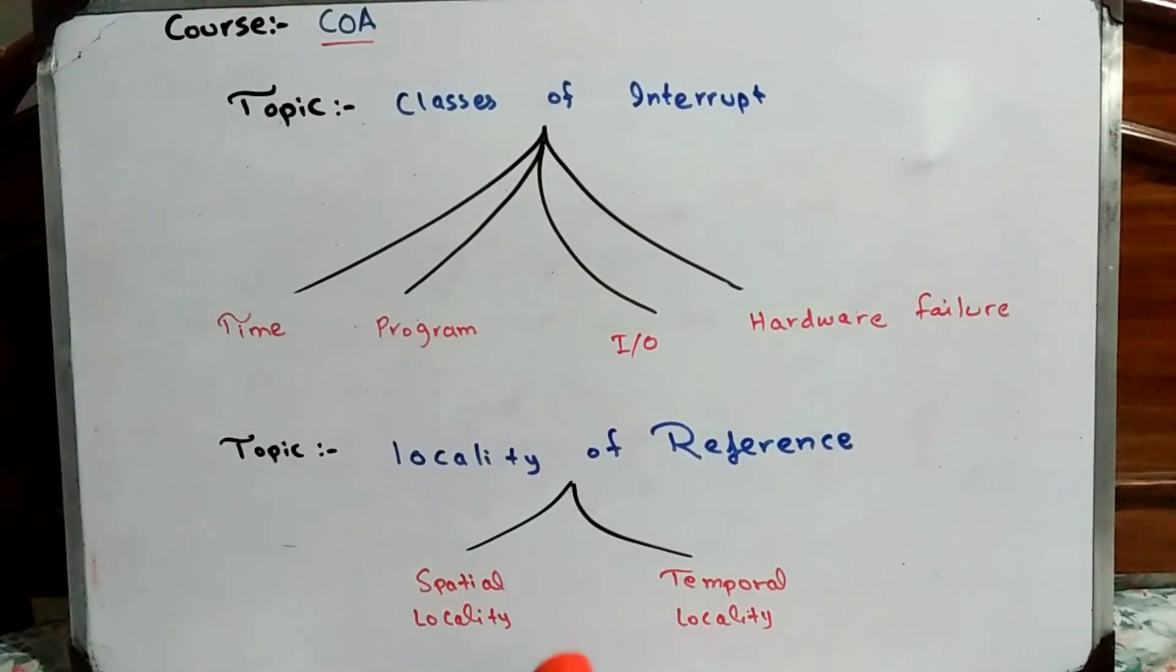Then the first type is spatial locality. In spatial locality, if CPU accesses a block, it is not necessary to access the same word. It is possible that CPU accesses word 1, next time word 2, next time word 3. It is not sure that it will always access the same word in the same block.